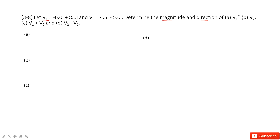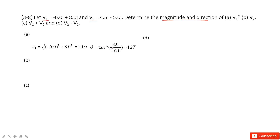First we look at v1 in two components. The magnitude is the square root of the x-component squared plus y-component squared. This is the triangle rule. And the angle theta is the arctangent of vy divided by vx.